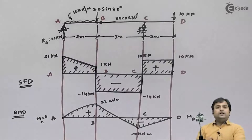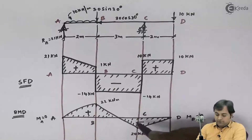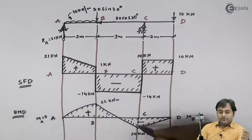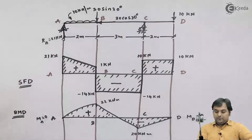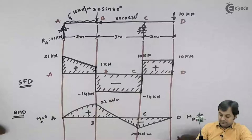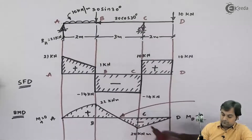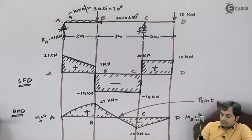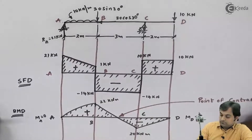One interesting thing to note here is that the bending moment is changing sign from positive to negative. The moment bending moment changes its sign from positive to negative, it becomes zero at one particular point, and this point is called the point of contraflexure.